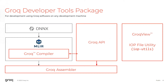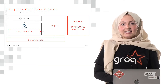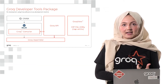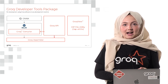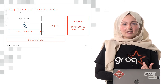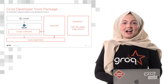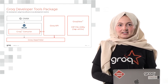We've split our software packages into two user profiles. The Grok developer tools package includes essentials for developing, static performance and power profiling, and debugging workloads for Grok chip, and can be used independently from Grok runtime and hardware. It contains the Onyx model analyzer, Grok compiler, Grok API, Grok assembler, Grok view, and the IOP file utility.